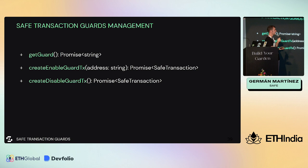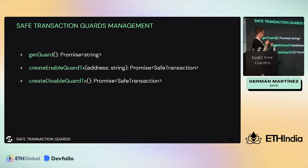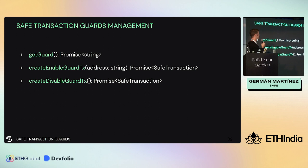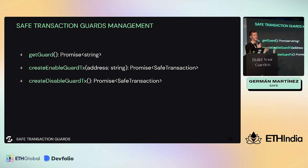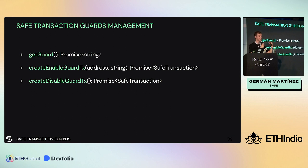How does the Safe Core SDK help with Safe transaction guards? Similar to what we have for modules, we have the method get guard - in this case a Safe can only have one transaction guard. You can enable or disable them, and these methods return a transaction that is ready to be signed by the signers.